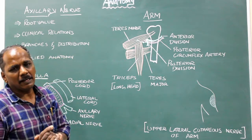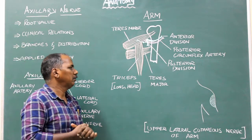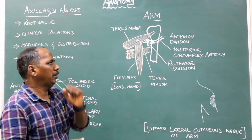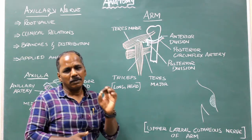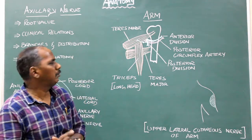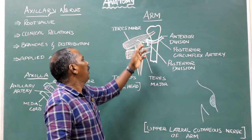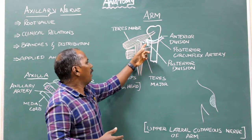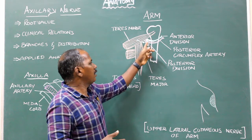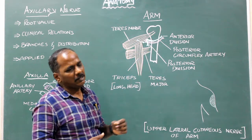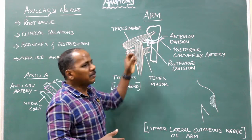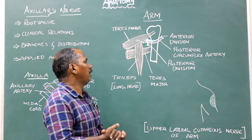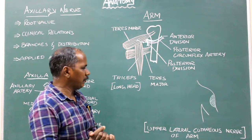Branches and distribution. Articular branch to the shoulder joint. Muscular branches to deltoid and teres minor. The branch to the teres minor arises from the posterior division, which presents a pseudo ganglion.